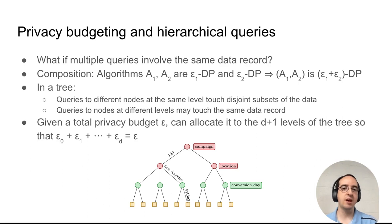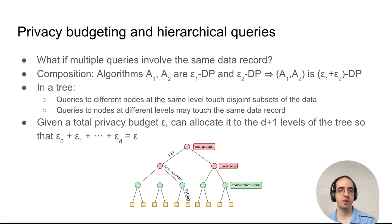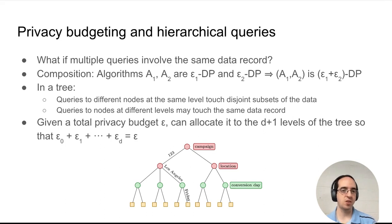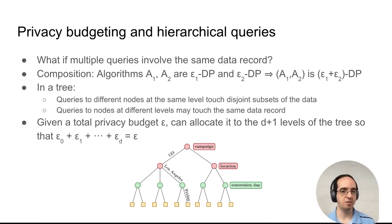Differential privacy guarantees that if we run multiple algorithms that are differentially private, their combination is also differentially private with a privacy parameter that's the sum of the parameters for the individual algorithms. So queries to different nodes at the same level touch disjoint subsets of the data, so we don't have to account for this. But queries to nodes at different levels may touch the same data record.